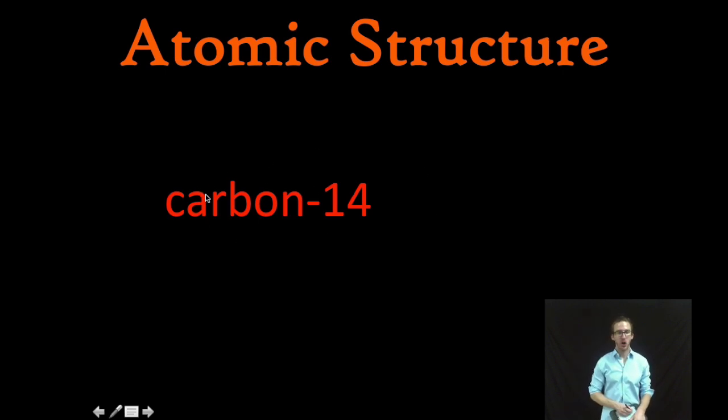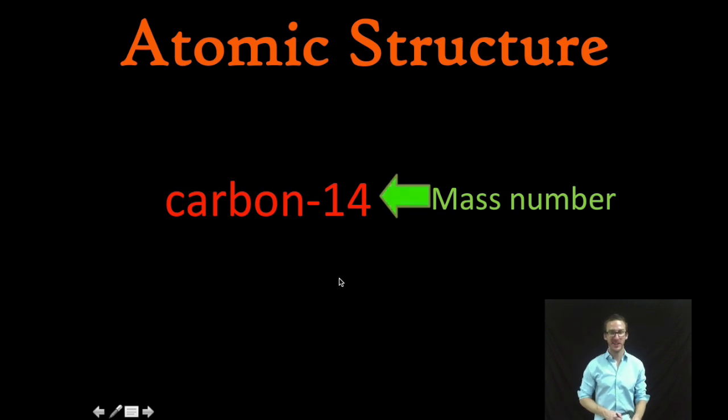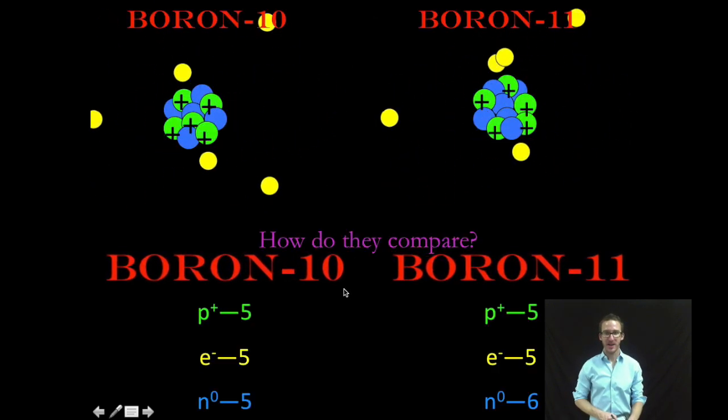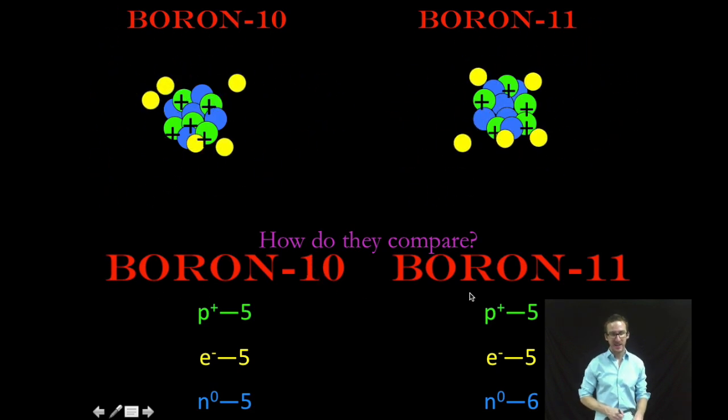So for example carbon-14. This tells me the mass number of this isotope of carbon is 14. So they come back to these two atoms of boron I've got boron-10 and boron-11.